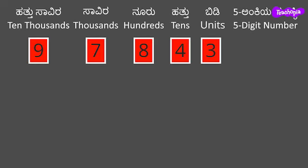Here we have digits 9, 7, 8, 4 and 3 in ten thousands place, thousands place, hundreds place, tens place and units place. We can write the number as 97,843 and place a comma to the right of the thousands place as shown for easy reading of the number. The number is read as 97,843.